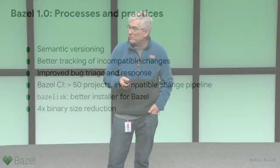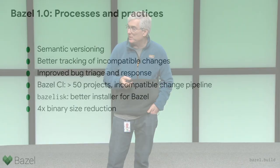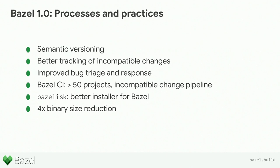Let's start with processes and practices. One of the bits of feedback we heard from a lot of users was: you're making a lot of changes at head, we can't keep up; you're making a lot of releases, we can't keep up; there are a lot of changes and you're breaking us. We heard that feedback, and we've gone to a semantic versioning style — conventional semantic versioning. 1.0 establishes the first semantically versioned release. Each major release will potentially have incompatible changes from the previous releases.